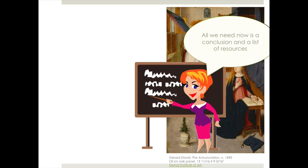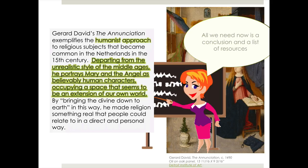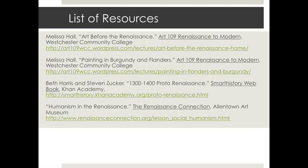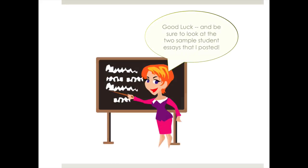So all we need now is a conclusion and a list of resources. Here's a conclusion: Gerard David's The Annunciation exemplifies the humanist approach to religious subjects that became common in the Netherlands in the 15th century. Departing from the unrealistic style of the Middle Ages, he portrays Mary and the angel as believably human characters occupying a space that seems to be an extension of our own world. By bringing the divine down to earth in this way, he made religion something real that people could relate to in a direct and personal way. And here's a list of resources, much like the resources we used in the basic visual analysis. You are not required to do additional research for this essay — you will have plenty of resources just from the class itself. Be sure to look at the two sample student essays that I posted to get an idea of the expectations for this assignment. So good luck, and thanks for listening.